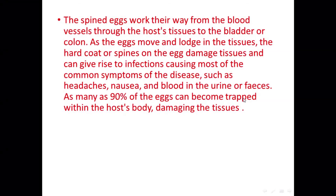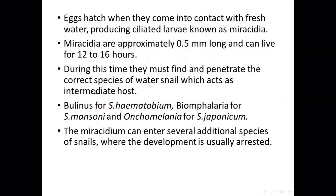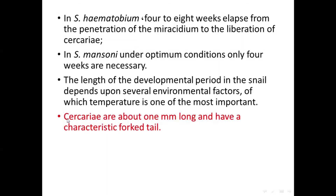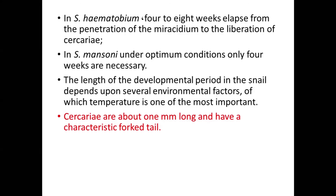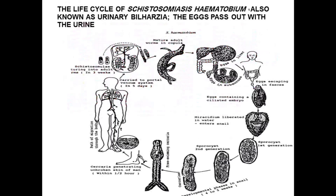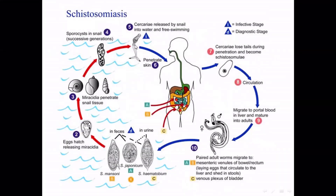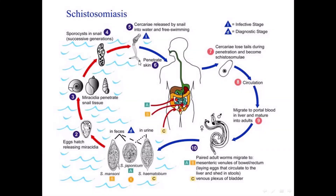As many as 90 percent of the eggs can become trapped within the host body. بالنسبة للـ cercariae — are about 1 mm long and have a characteristic forked tail. So if you notice when we talked about life cycle، here we have the cercariae — it's about 1 mm.